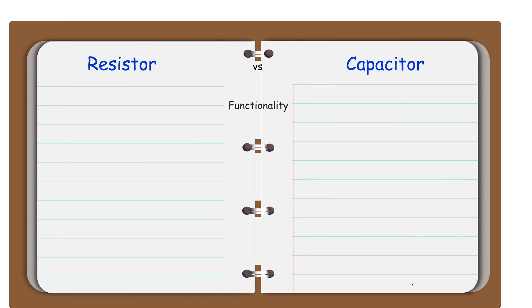Functionality. A resistor works by converting excess electrical energy into heat, which is dissipated into air. Capacitor works by keeping the positive and negative charges separated from each other.